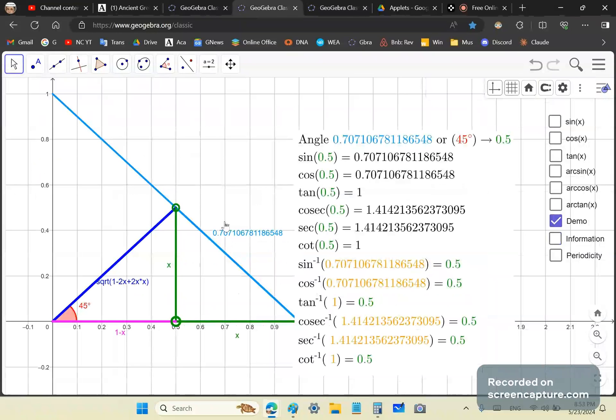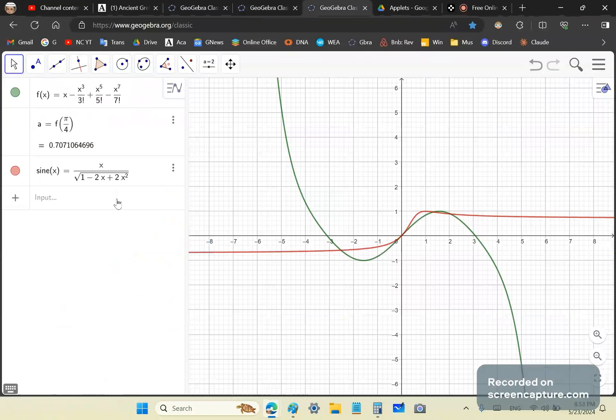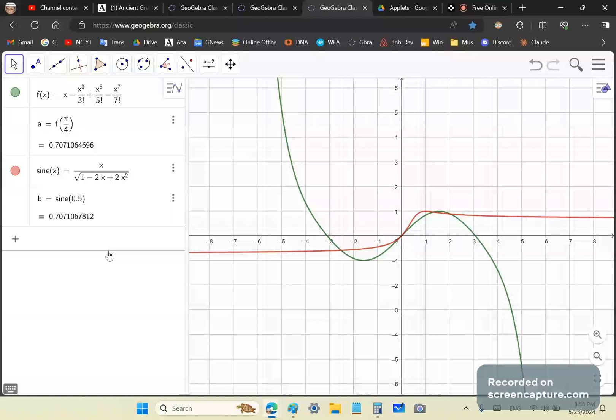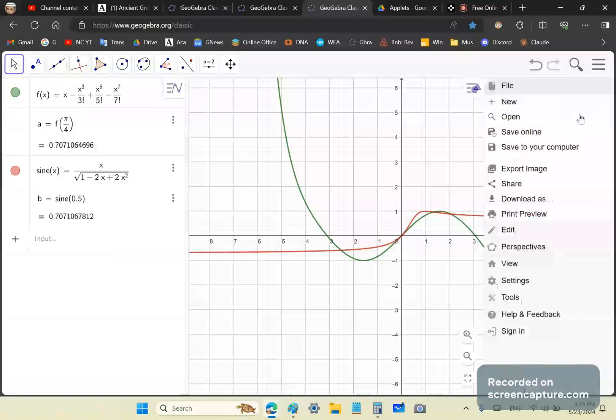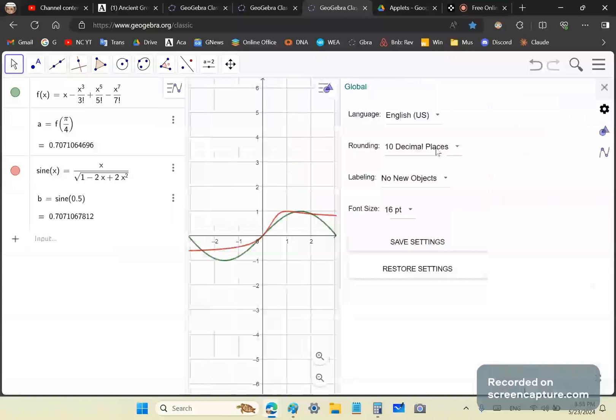We need to know what the parameter is for pi over 4, and the parameter for pi over 4 happens to be 0.707, which is half the distance of this line. That's not the parameter, that's the name of the angle. But the parameter is 0.5. How do we get 0.5? We take this value, square it, divide by 2, and take the square root again.